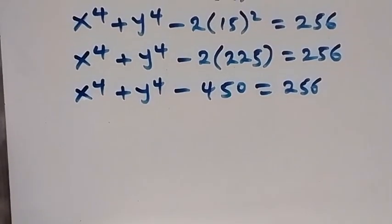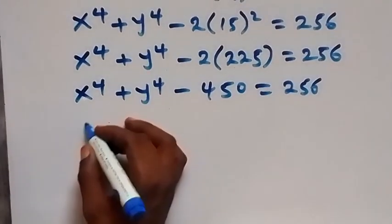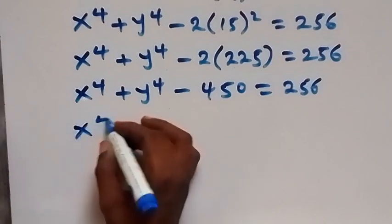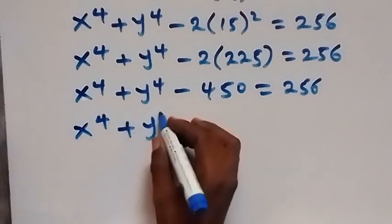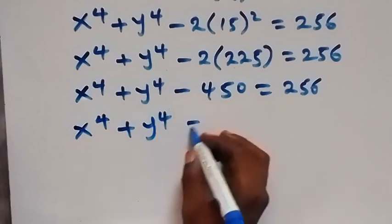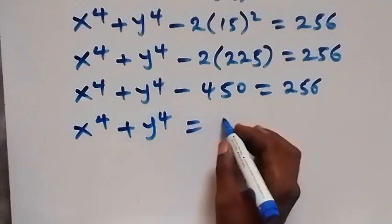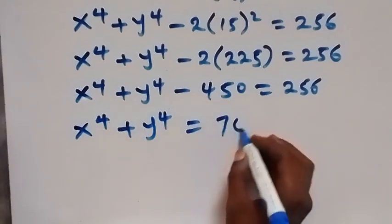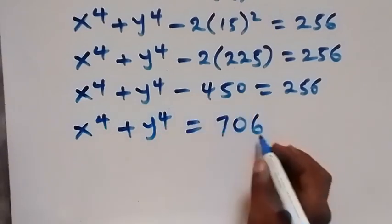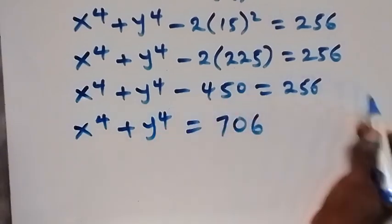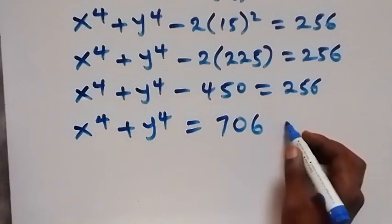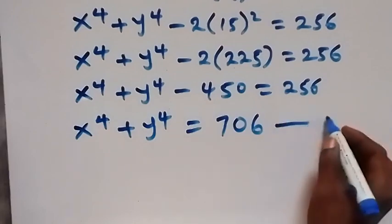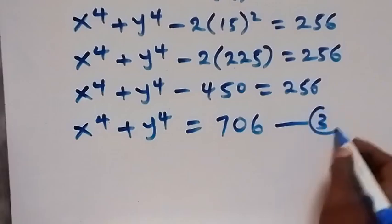Carrying minus 450 to the other side it becomes plus 450, giving us x to the power of 4 plus y to the power of 4 equals 706. Let's label this as equation 3.